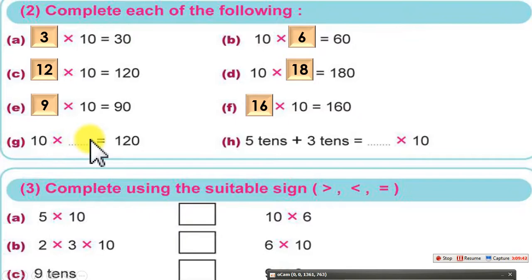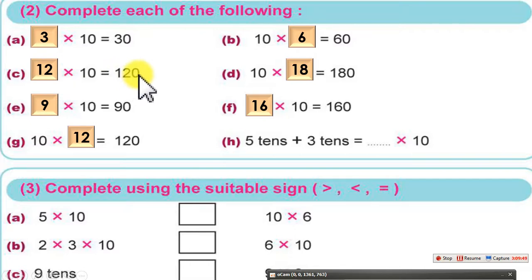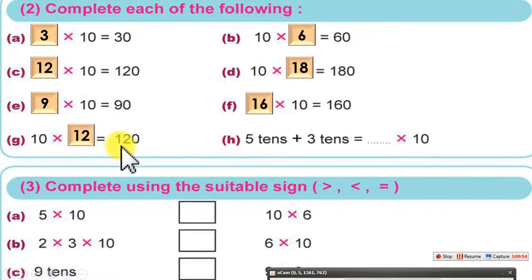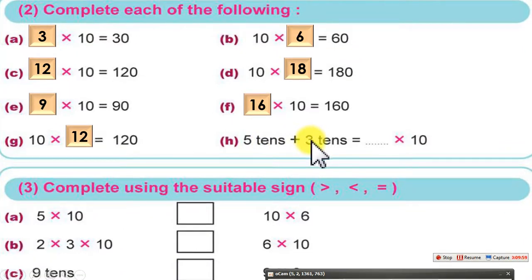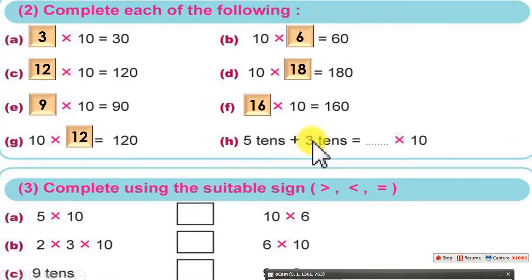10 times 12 equals 120, the same as 12 times 10 equals 120. 5 tenths plus 3 tenths equals 8 tenths. 8 tenths equals 80, which is 8 times 10.